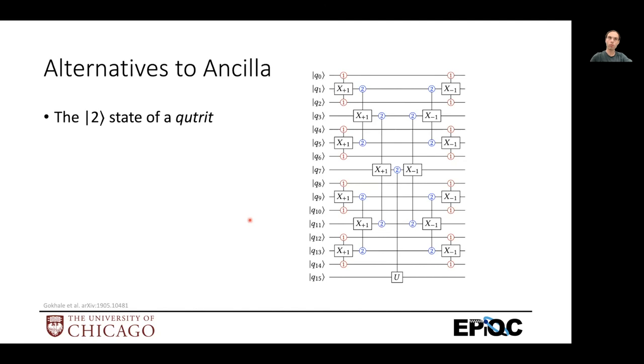So there's another alternative to Ancilla here, which where if you have qtrits or qdits, which is breaking out of the binary abstraction of qubits. So instead, it can actually store what it would have stored on the Ancilla in the two state of one of the input qubits. So, in this circuit, you can see, it has a similar structure to the multiple controlled not gates we looked at before, but instead of Ancilla, it's actually using one of the input controls as that intermediate result.